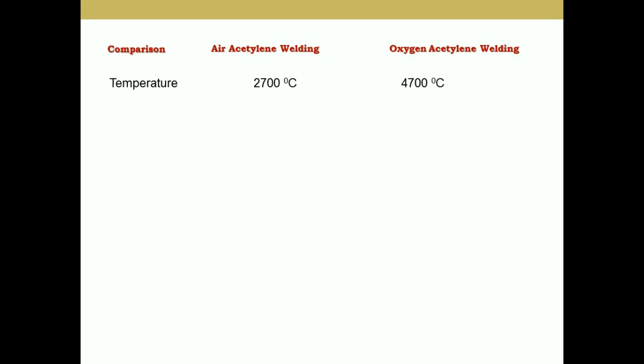Let's have a comparison between air acetylene welding and oxygen acetylene welding. With respect to temperature, air acetylene welding operates at around 2700 degrees centigrade, whereas oxy-acetylene welding reaches 4700 degrees centigrade. Regarding time, air acetylene is a slower process whereas oxy-acetylene is a faster process.